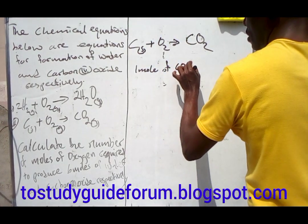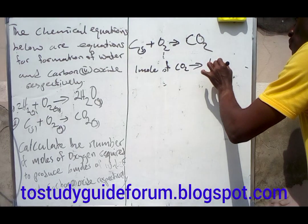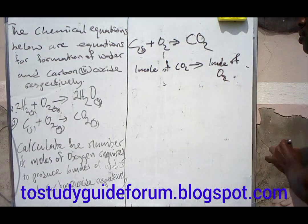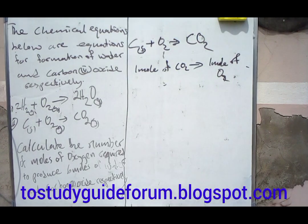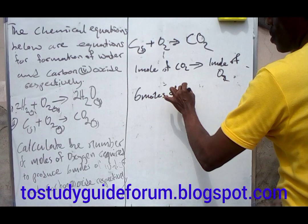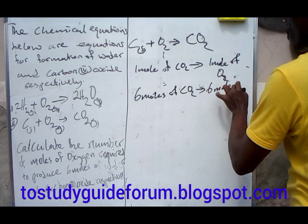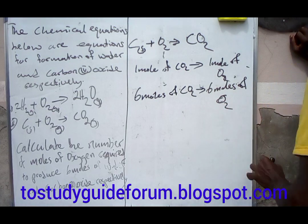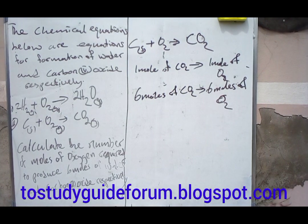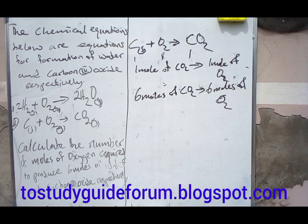Looking at this, the ratio is one to one — one mole of carbon dioxide requires one mole of oxygen. So to produce six moles of carbon dioxide, we still require the same number of moles of oxygen. Because the ratio is one to one, the answer is six moles of oxygen required. Thank you for being part of the class.